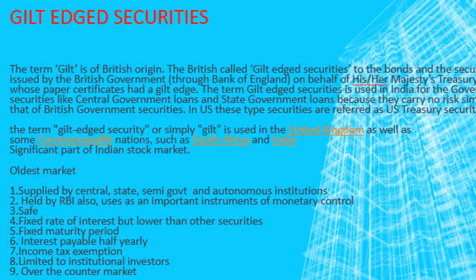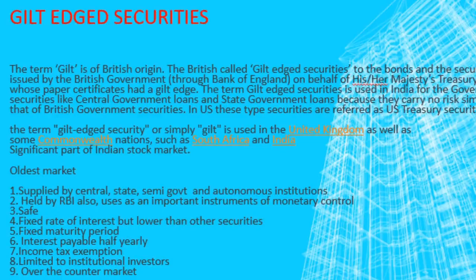The term 'gilt' is of British origin. The British called gilt-edged securities the bonds and securities secured by the British government through the Bank of England on behalf of His or Her Majesty's Treasury — the paper certificates had a gilt edge. The term gilt-edged security is used in India for government securities like central government loans and state government loans, because they carry no risk. In the U.S., these types of securities are referred to as U.S. Treasury securities.